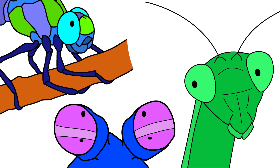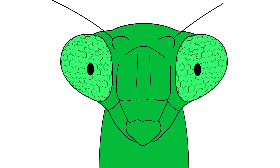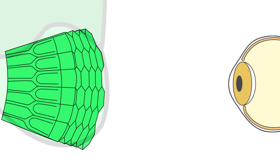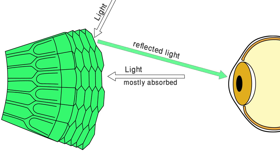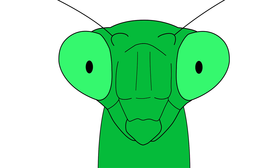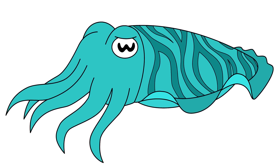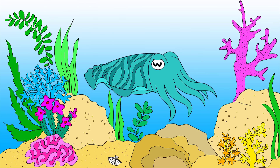Some insects and crustaceans such as mantises, dragonflies, and mantis shrimps have pseudopupils, which means they are only optical illusions. A mantis, for example, has compound eyes composed of hundreds of light-sensing units. When some of these units are aligned with the axis along which you are viewing, they appear black because they're absorbing most of the light that comes in rays aligned to them. That's why these pseudopupils remain stationary until you move or the mantis moves.